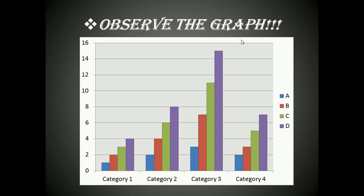Category three — let us observe closely. Category one has four bars: blue, red, green, and purple. The height of each bar is increased by one unit. In category two, the four bars show the height increasing by two units every time — from blue to red, red to green, and green to purple — giving values two, four, six, and eight.